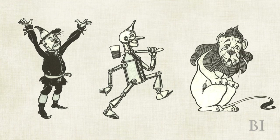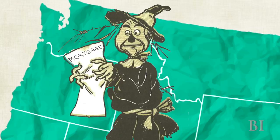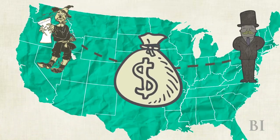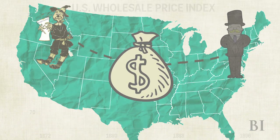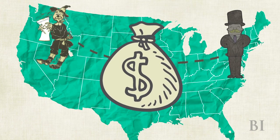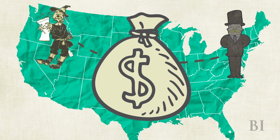In their telling, each character represents a person or group active in the late 1800s. The Scarecrow represents the farmers in the West. Most of these farmers had mortgages and owed money to the bankers in the East. When deflation hit, the value of the farmers' debts rose — the amount they owed was now worth much more than at the time of the loan. Bad for the farmers, but great for the bankers.